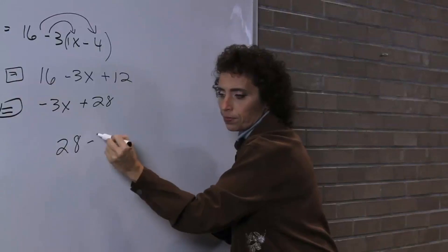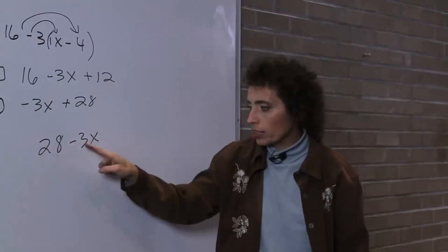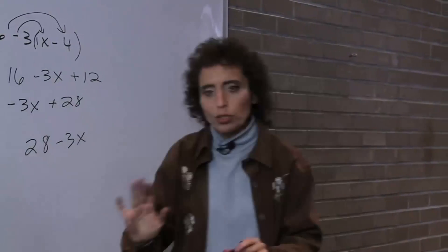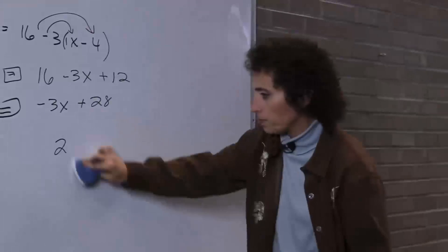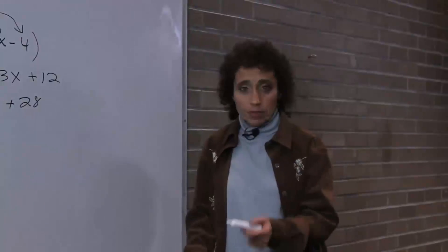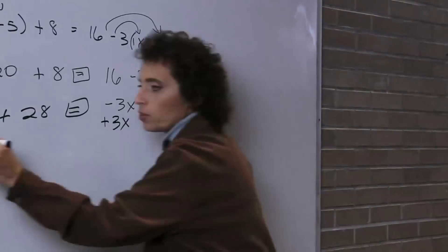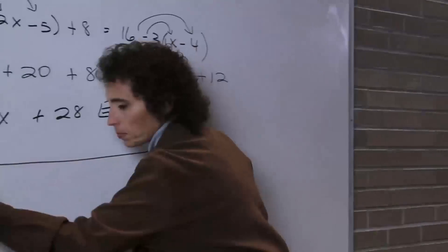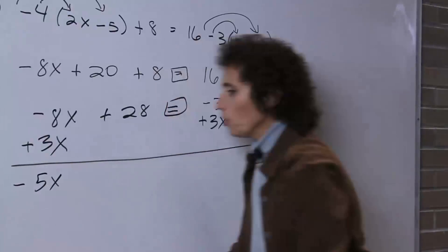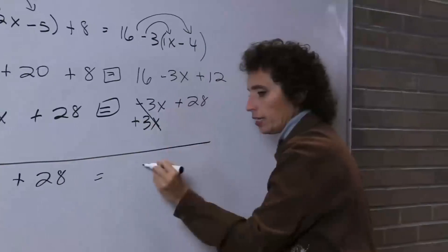I like to write the variable part first. So negative 3x — it has no friends. I have 16, I have 12, I have 28. So on the left: negative 8x plus 28. On the right: negative 3x plus 28. Variable first — I'm going to add 3x to both sides. I owe you 8 but I have 3, so I owe you 5x's — it's negative. Negative 5x plus 28 equals 28.